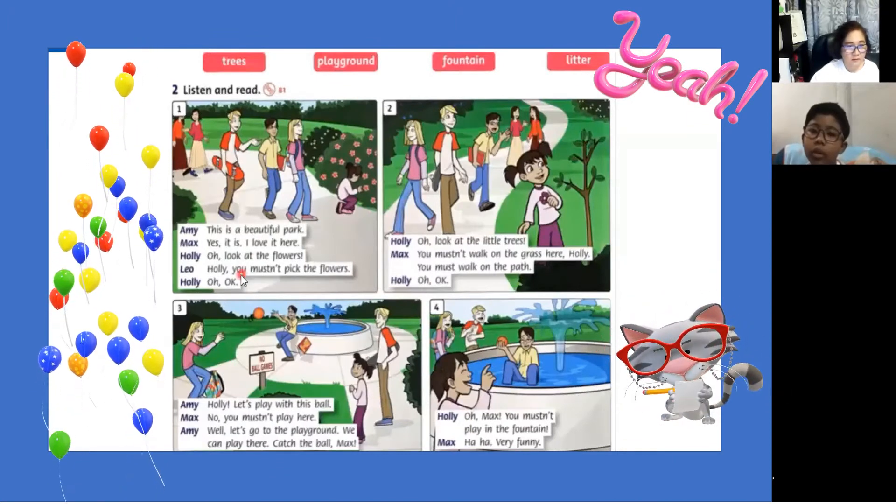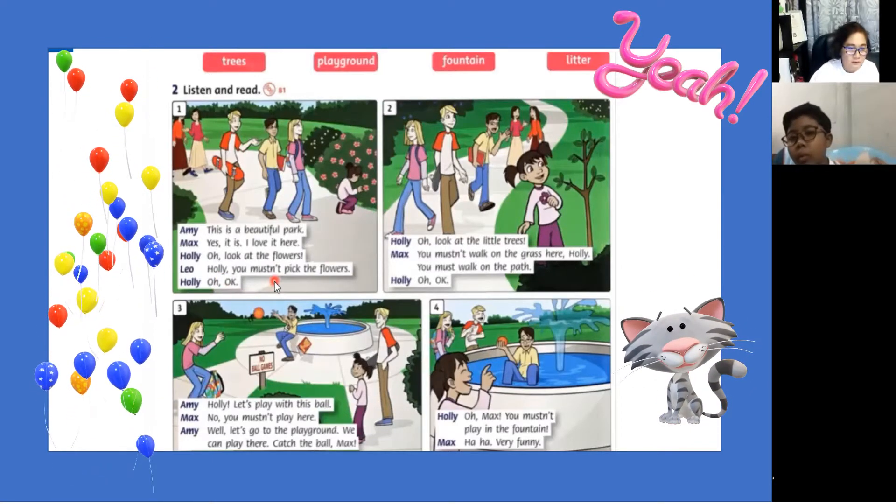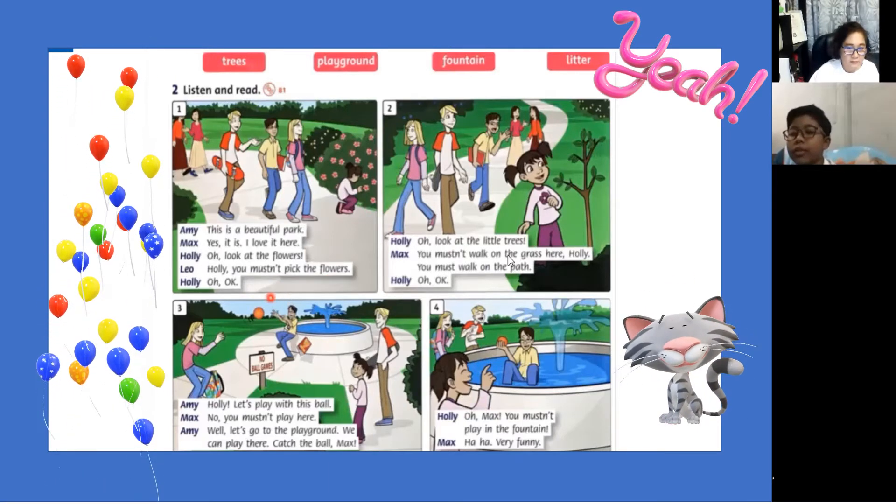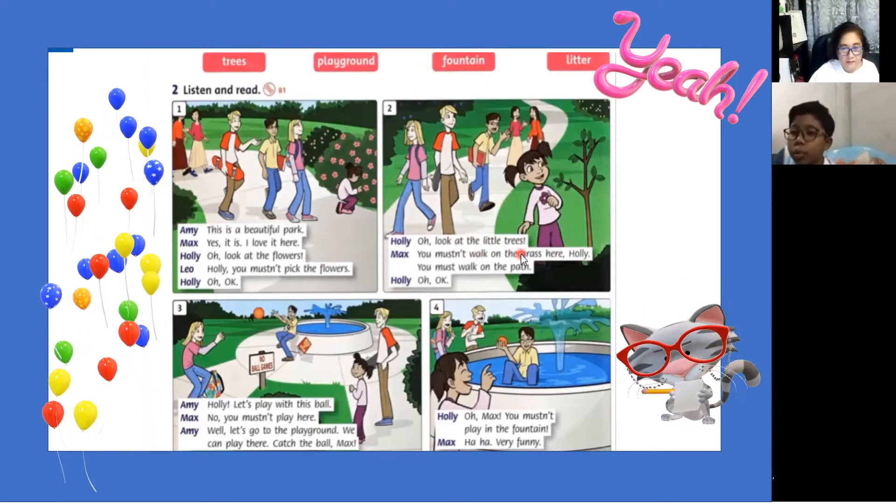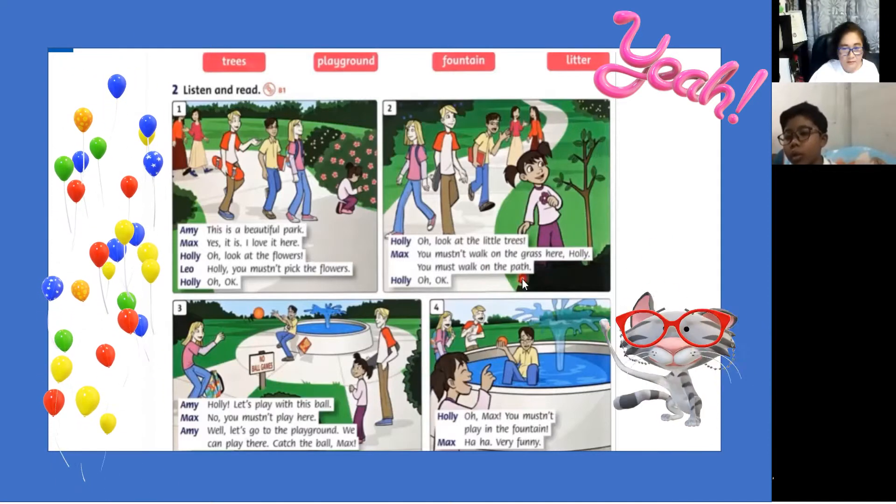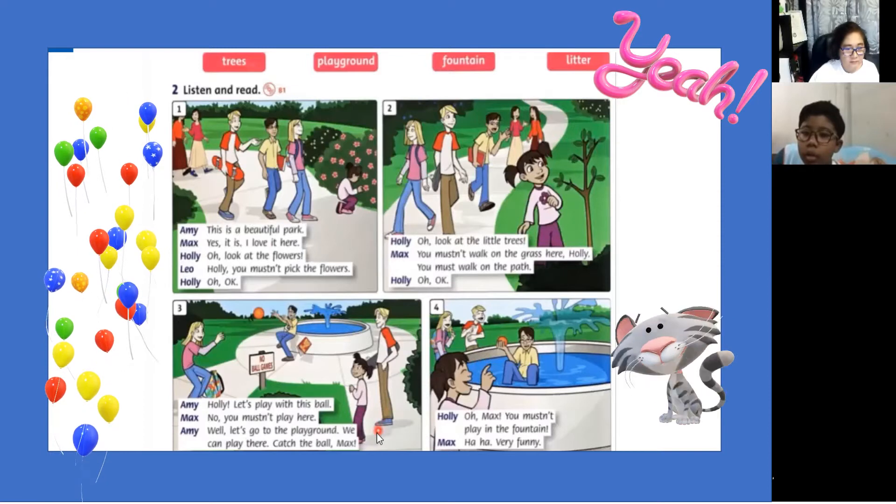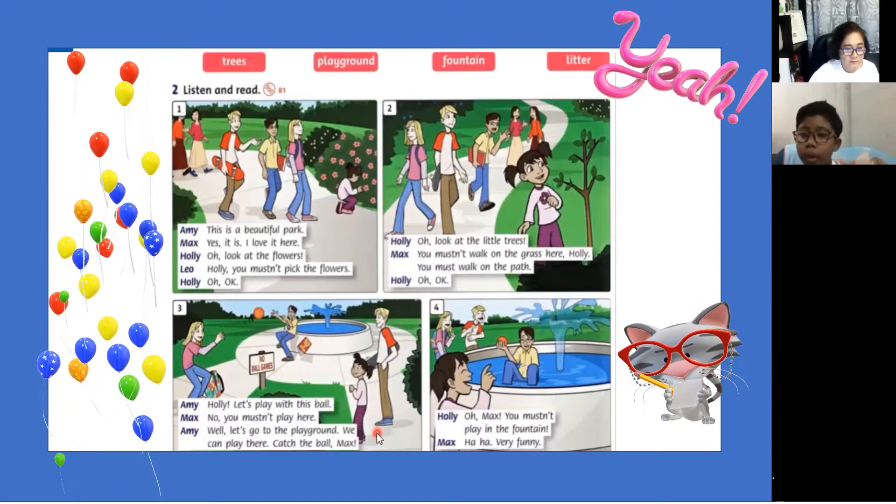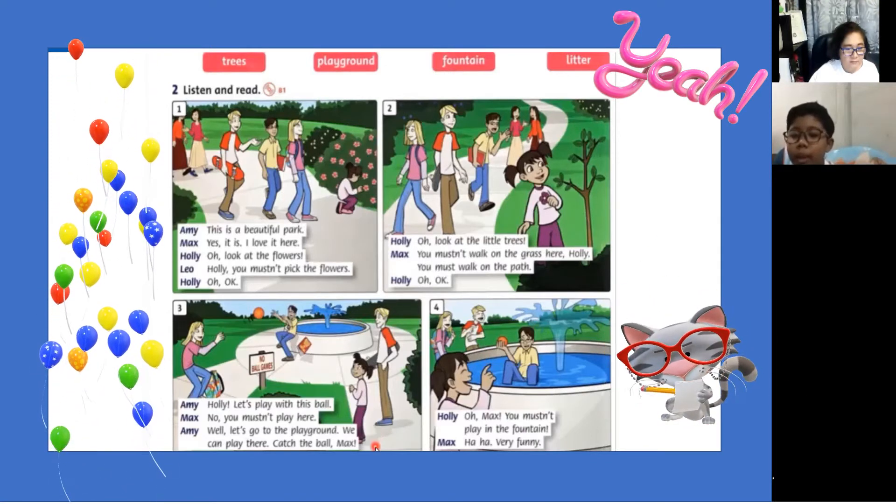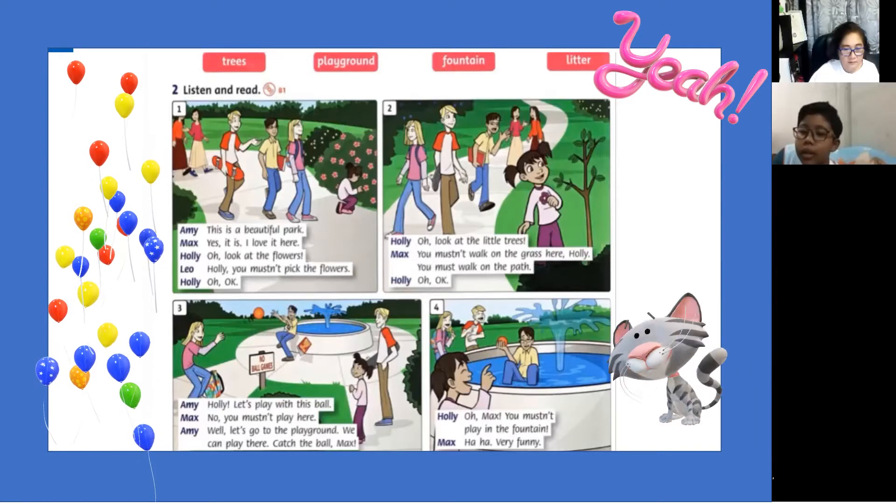Beautiful park, yes it is, I love it here. Oh look at the flowers, Holly you mustn't pick the flowers. Oh okay. Oh look at the little trees, you mustn't walk on the grass here Holly, you must walk on the path. Oh okay, Holly let's play with this ball, no you mustn't play here. Let's go to the playground, we can play here. Catch the ball Max.